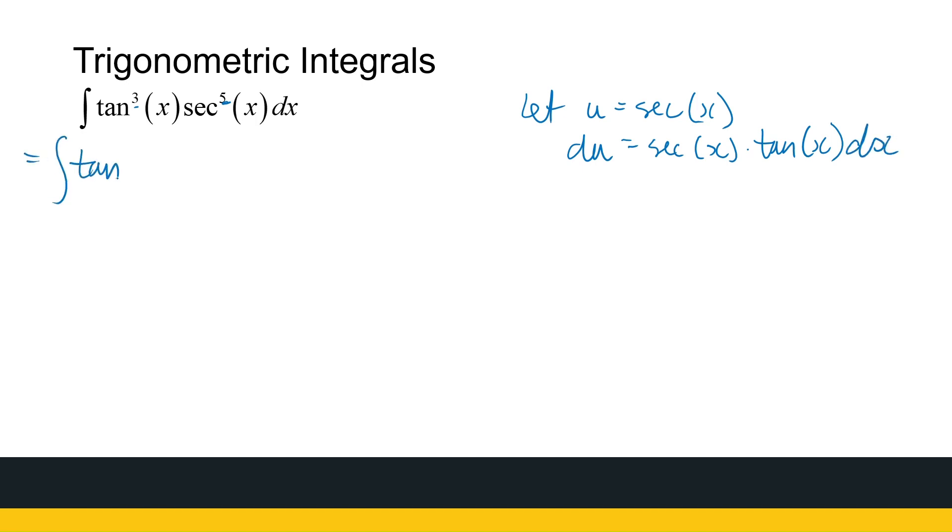I'm going to leave this as tan²(x). I'm taking one of those tans, and sec⁴(x), I'm taking one of the secs out, times sec(x) times tan(x)dx, where I know this whole tail is going to be swallowed up by du.